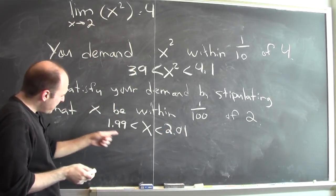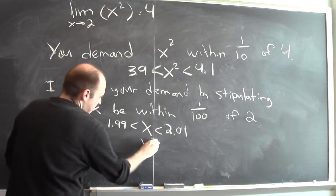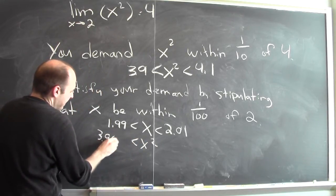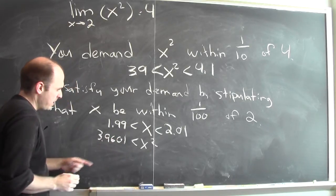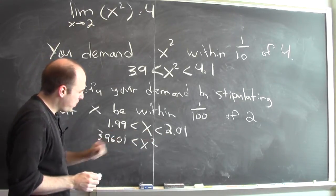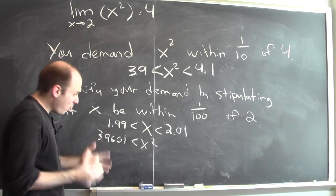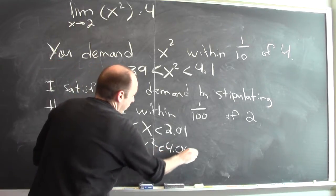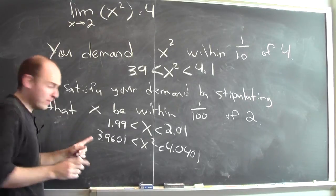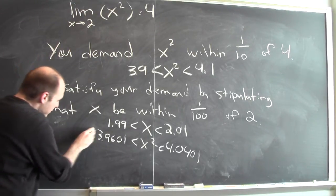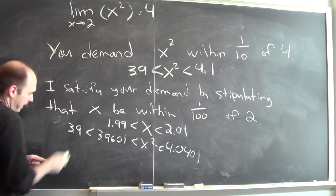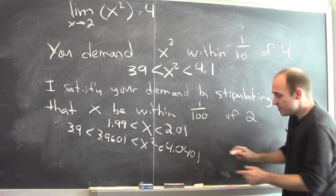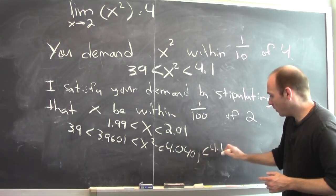And if x is bigger than 1.99, then x squared is bigger than 3.9601. Looking at these numbers: 3.9601 is bigger than 3.9. And on the other side, 4.0401 is smaller than 4.1.